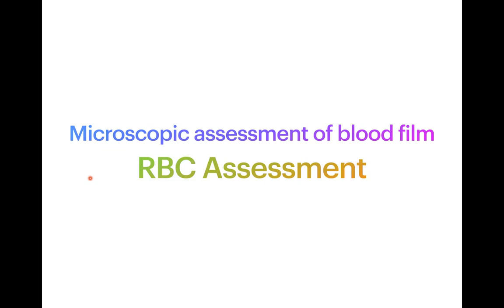Today we will be talking about RBC morphology. There are a lot of variations. The normal morphology is called normocytic normochromic. I will discuss all the variations of RBC morphology that can help in diagnosing conditions — some are characteristic, some are nonspecific, some are suggestive, and some are diagnostic. We will see how to identify each finding and what its importance is.